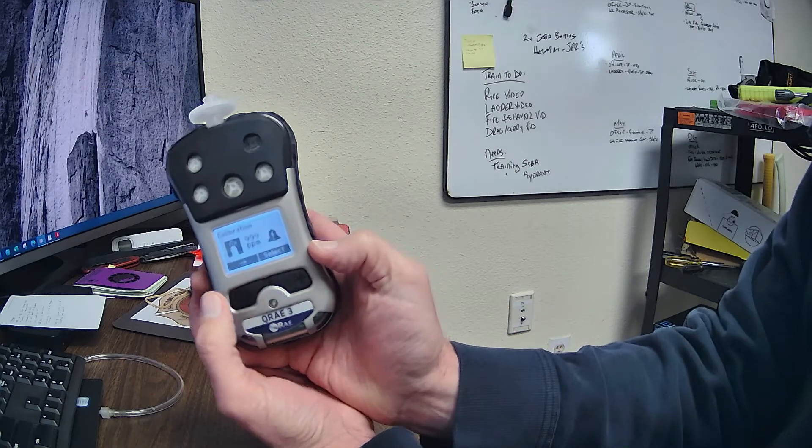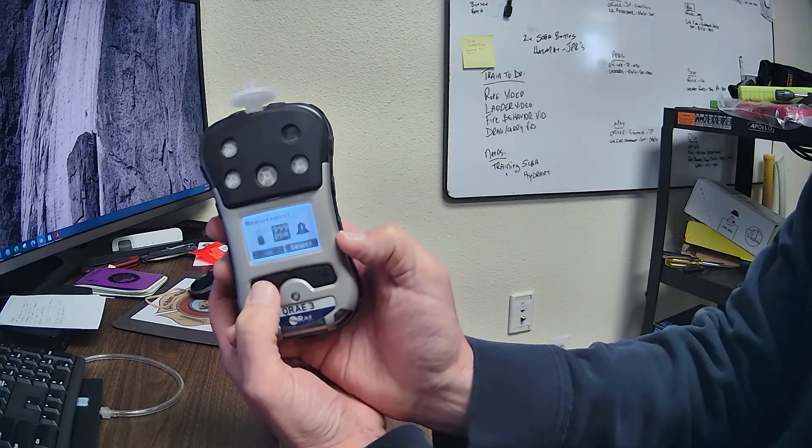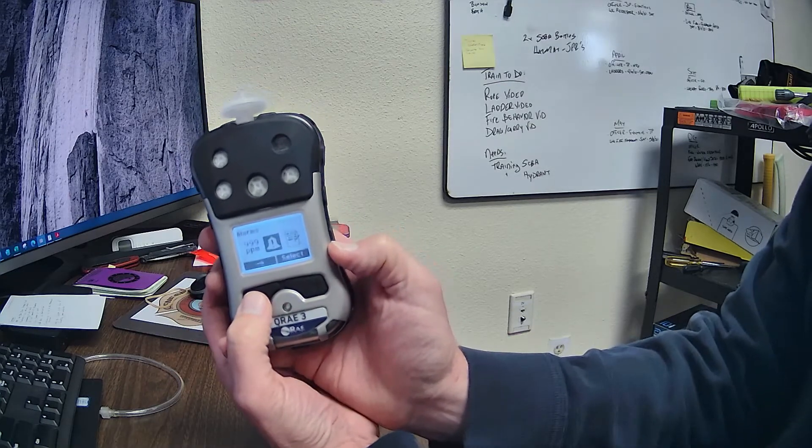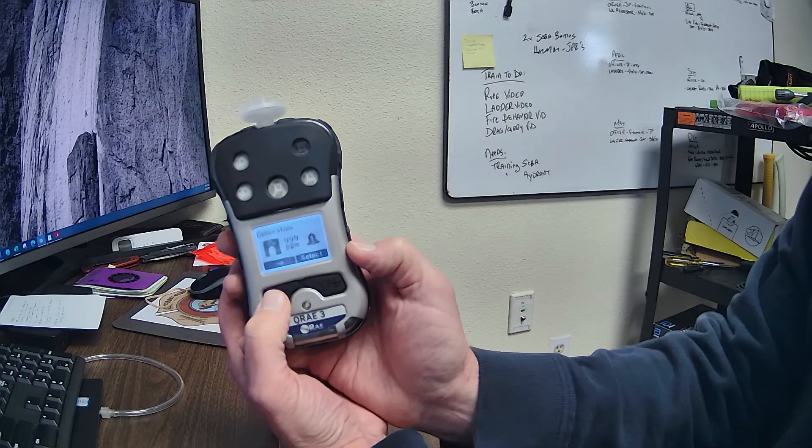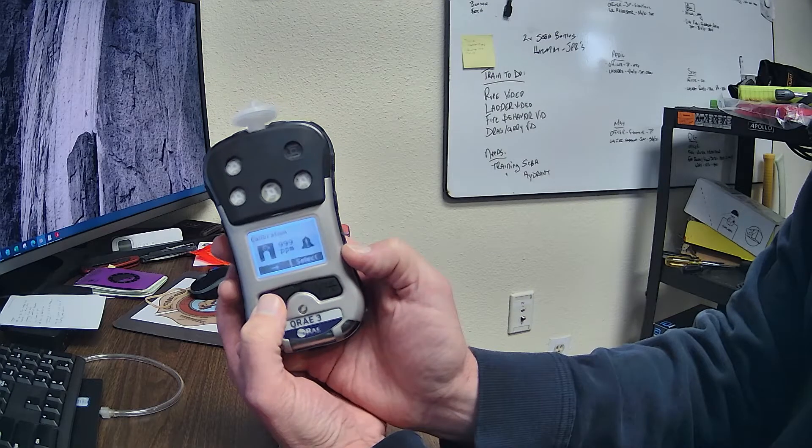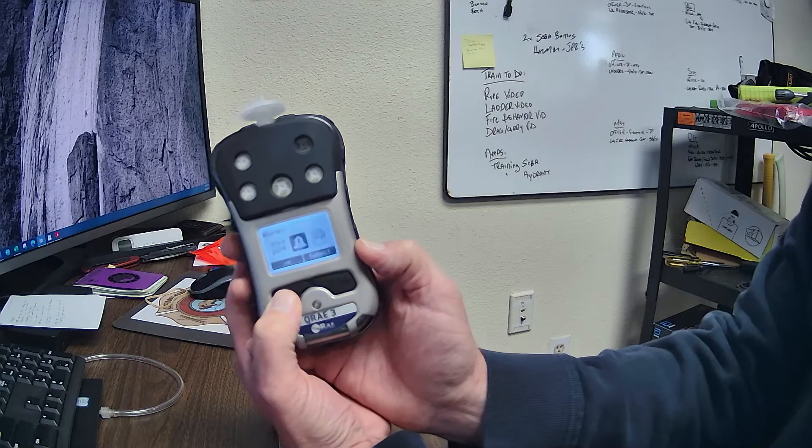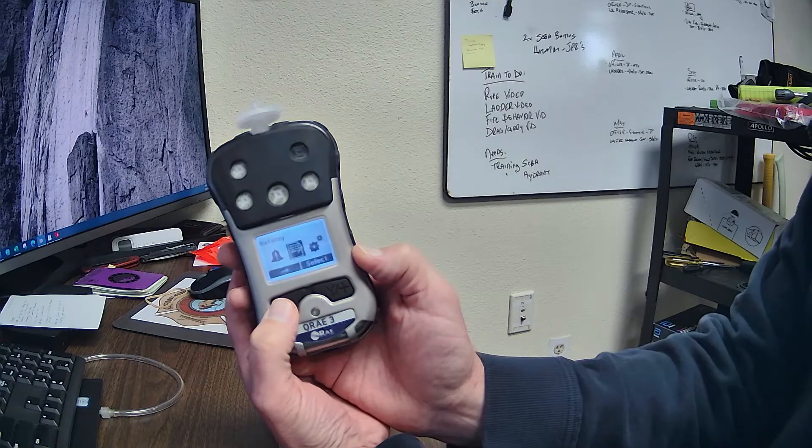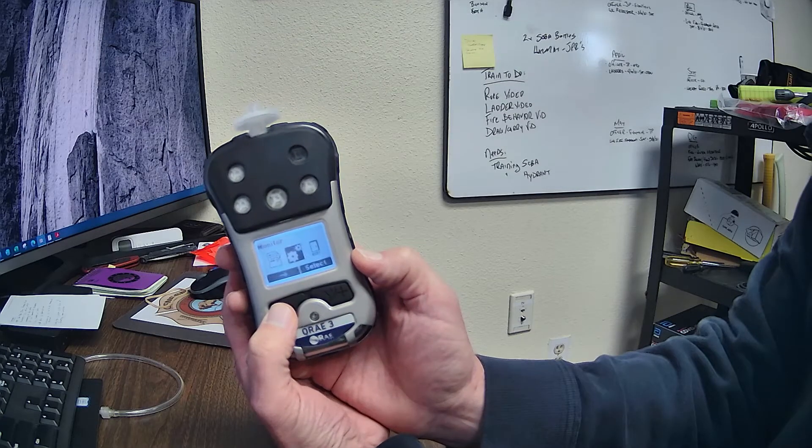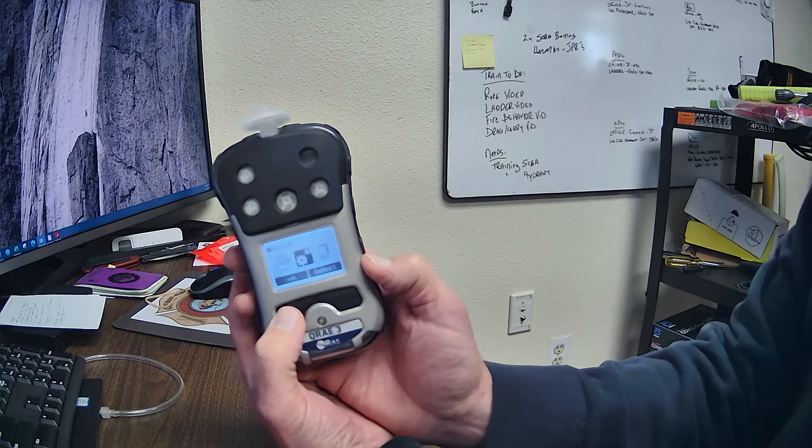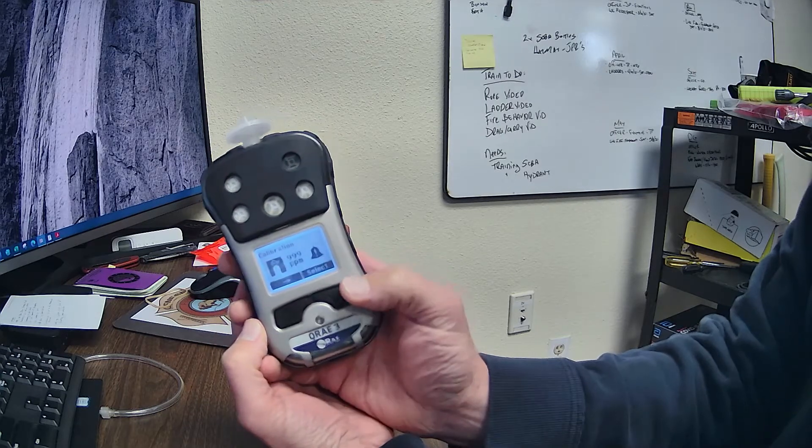And here we have the different things we can do. We have the little bottle, which is our calibration bottle. We have the exclamation, and then we have some settings, and we can exit. So, these all have a function. This is what the alarms are. This is your data log, so this is all the readings that this thing's ever taken. This is your settings, so you can change the language, the time. But we want the little bottle, because that's what we're doing.